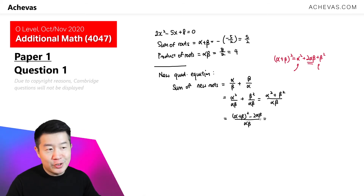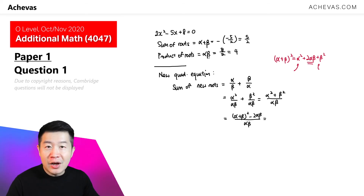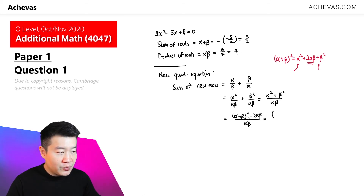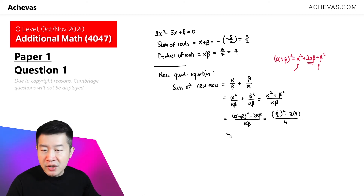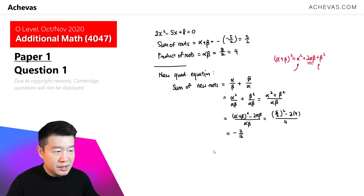This is extremely helpful because we have the values for alpha plus beta and alpha times beta from the previous part. So for alpha plus beta, this is 5 over 2 squared, minus 2 times alpha times beta which is 4, and divided by alpha times beta which is 4. So the sum of the new roots is minus 7 over 16.